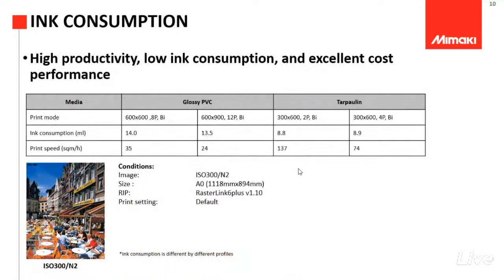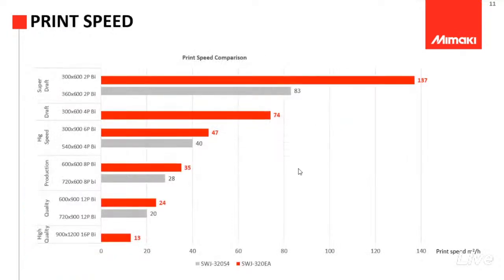Untuk kecepatannya sendiri, ini ada perbaikan yang cukup signifikan. Yaitu kecepatan yang kira-kira sekitar 60% lebih baik daripada seri sebelumnya. Kita lihat kalau untuk seri 2-pass-nya, itu bisa mencapai 137 meter per jam. Yang dibanding dengan seri sebelumnya, itu cuma 83 meter per jam.